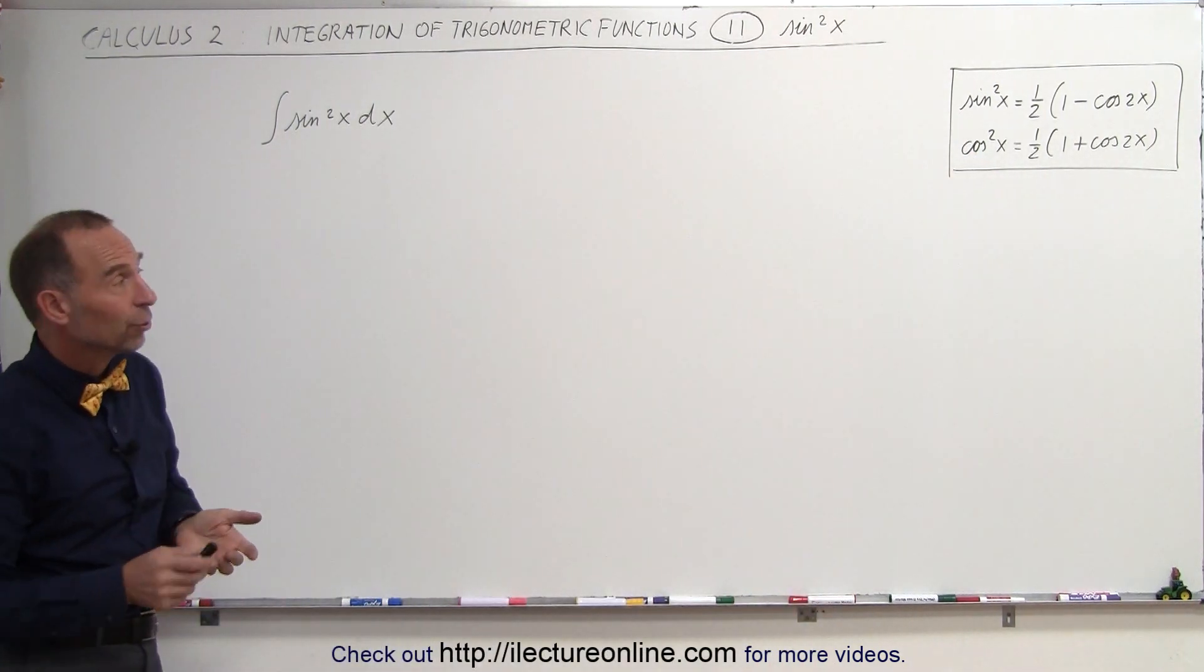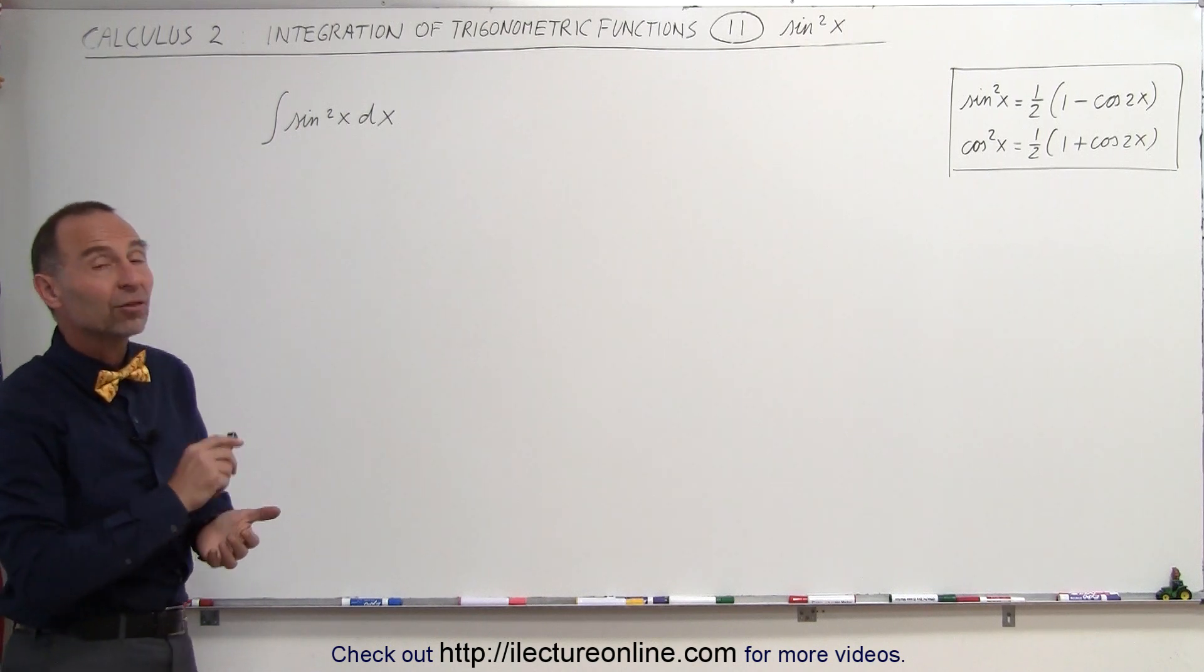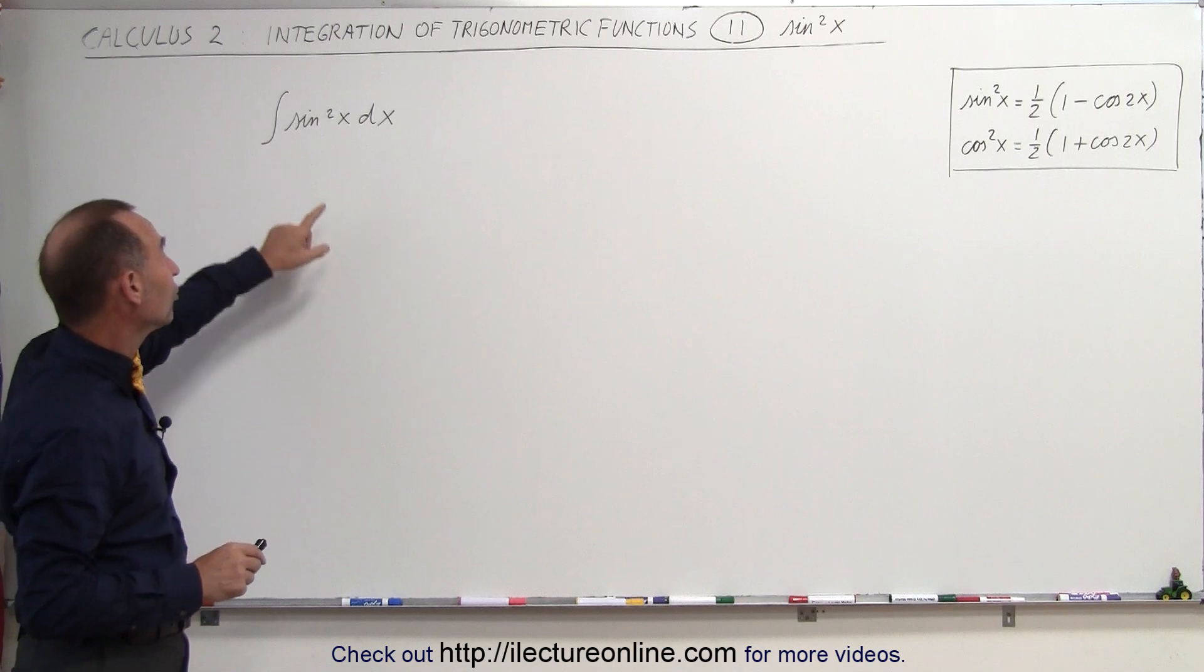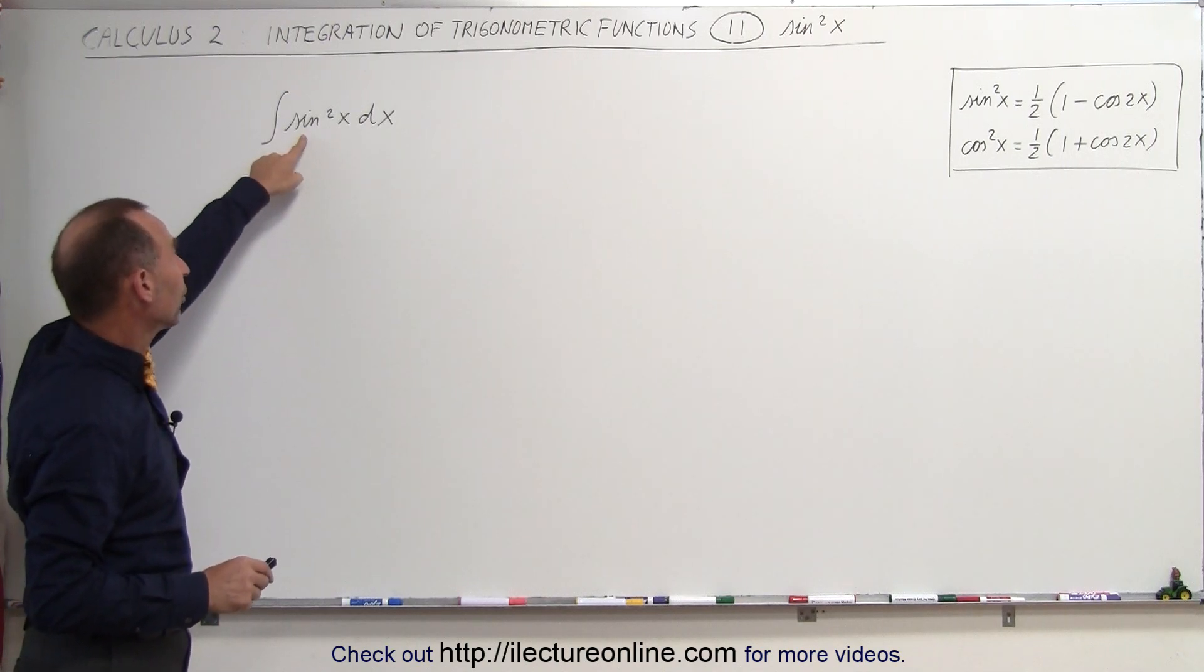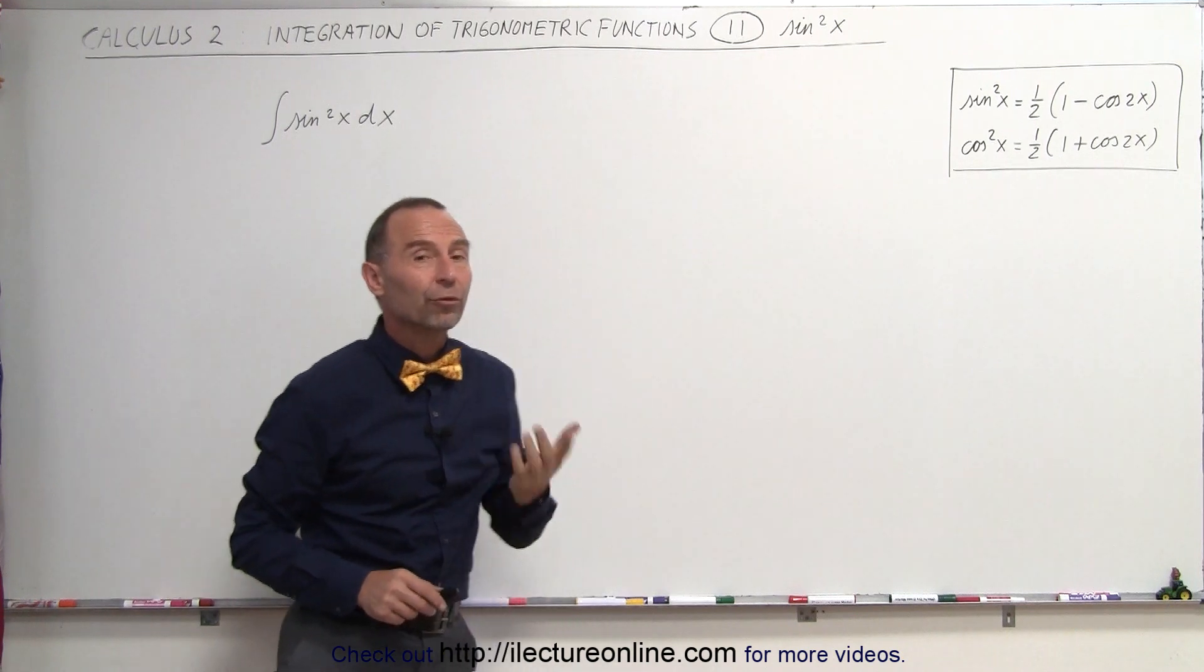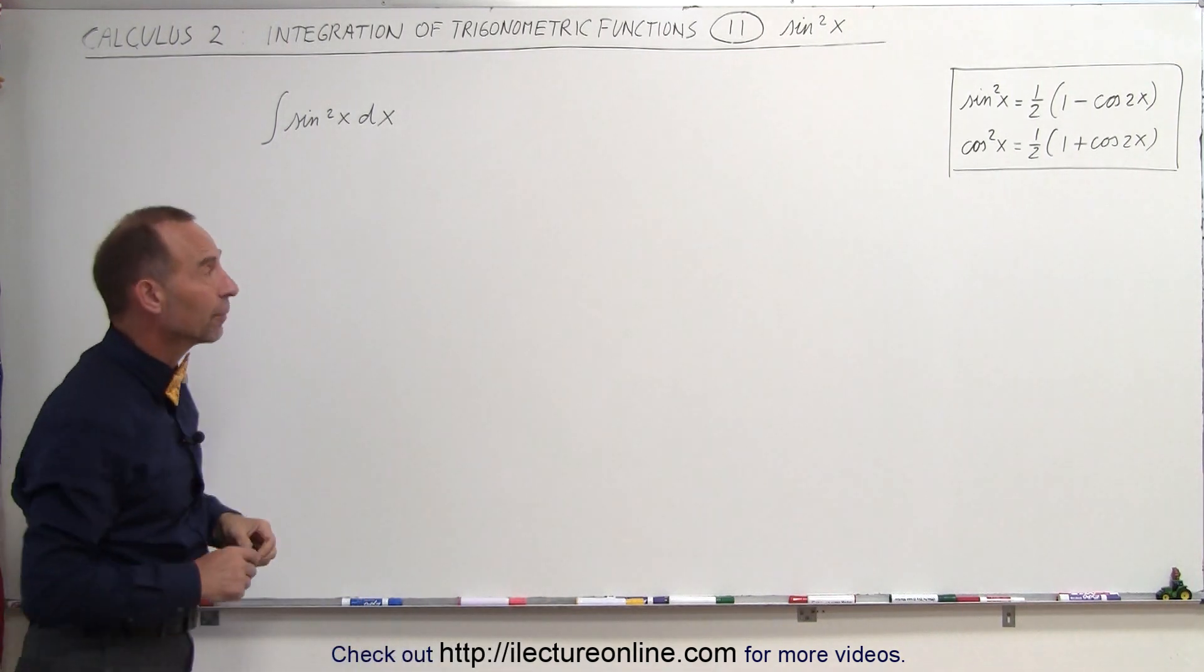Notice that sine squared x can be written as one-half times one minus cosine 2x. When we do that, it changes a function that is to the second power into a function that's down to the first power, and that's a lot easier to integrate.